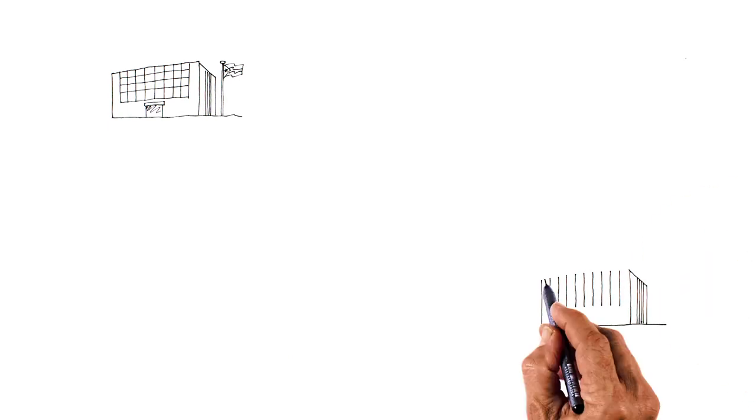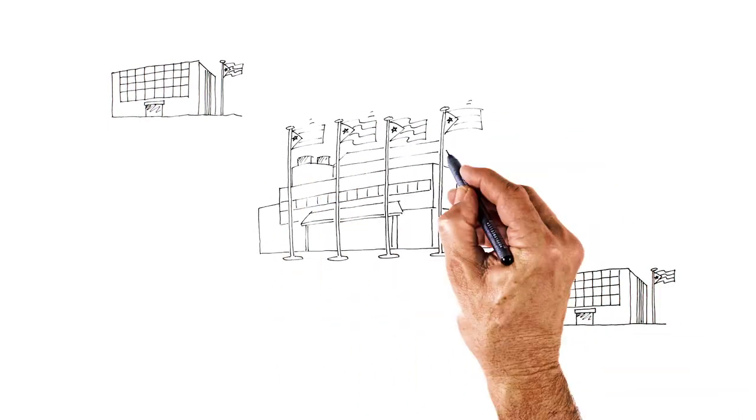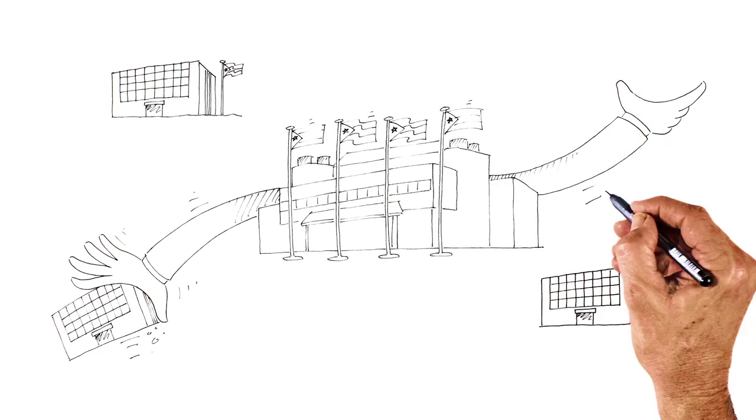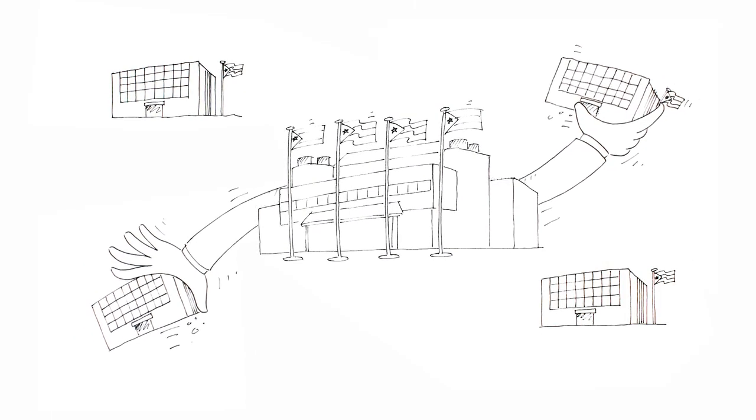Also, when state governments do try to break constitutional rules, the constitution often gives the central government the power to stop this from happening.